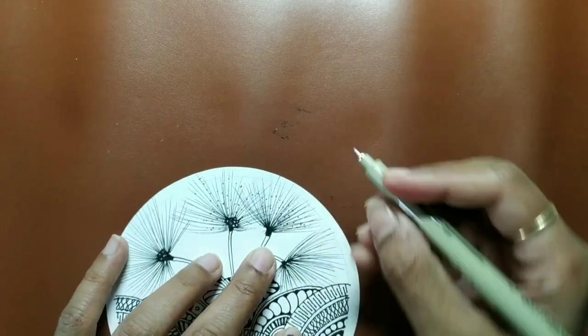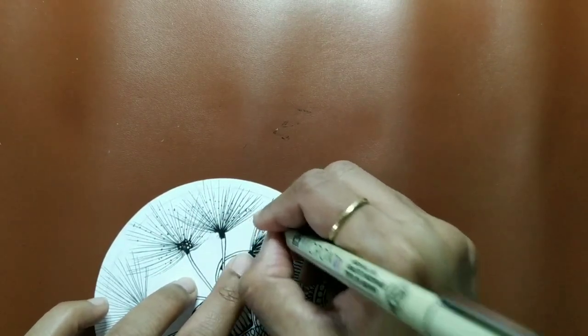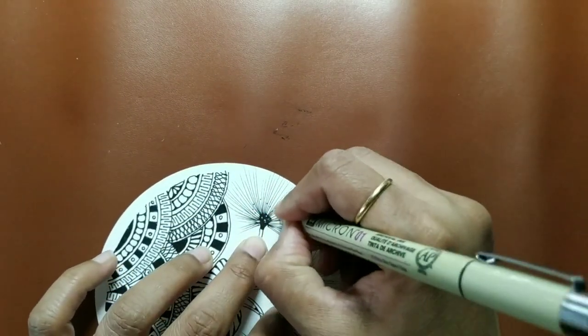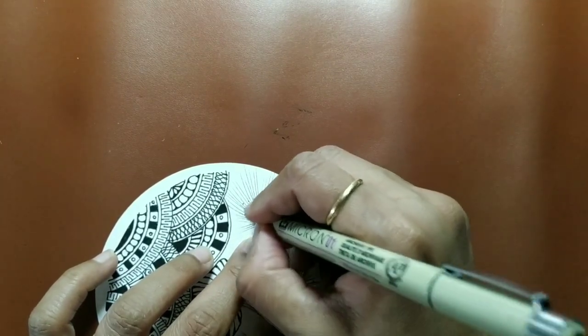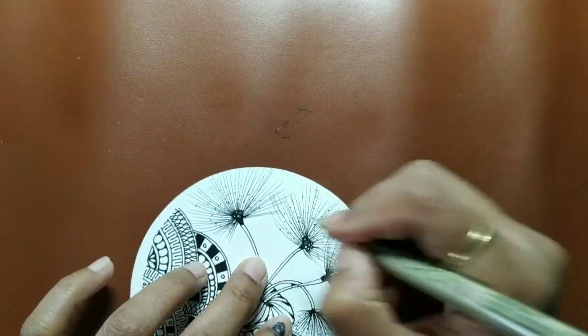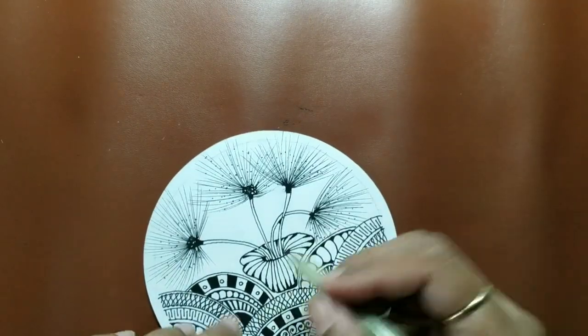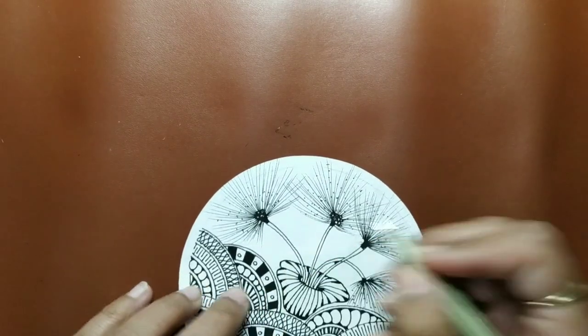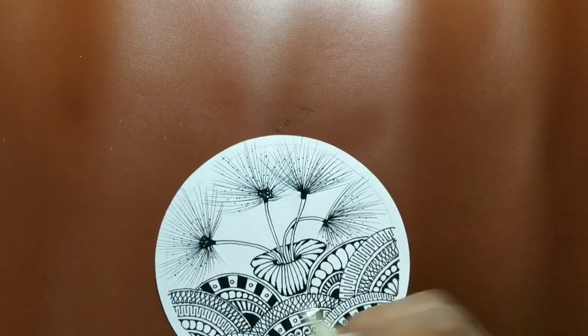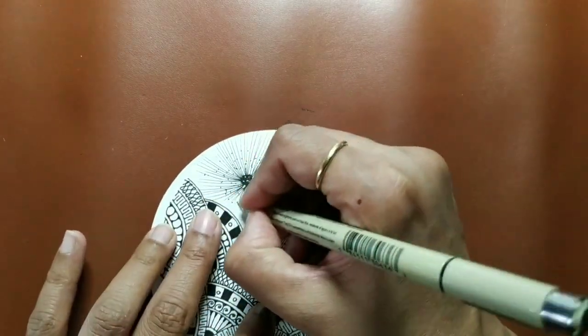So draw it that way, don't press your pen hard. So that's the tangle. Now if you want, you can add few things here and there, for example some caviars or some tipple or anything like that. But I'm first going to shade and then we'll see if we want to add something else. Let's move on to shading first.